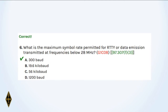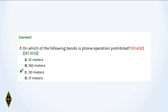And six: Maximum symbol rate permitted for RTTY and data below 28 megahertz — 300 baud. Like the old phone modems, the very first phone modems, 300 baud only. And seven: On which of the following bands is phone operation prohibited? That's the 30 meter band.